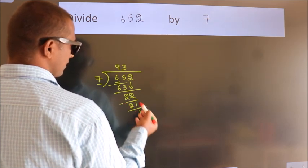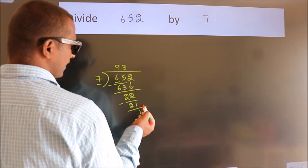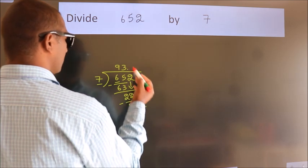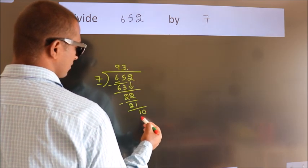After this, no more numbers to bring down. So what we do is put a dot and take 0. So, 10.